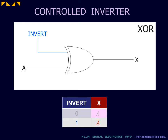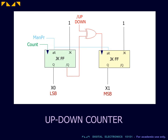When the invert input is 1, the output X is the inverse of the input A. When the XOR gate is inserted in the feed forward line of the up-down counter, the control input determines whether the counter will count up or count down.